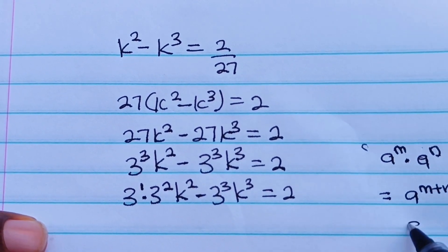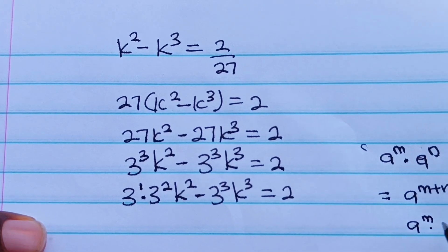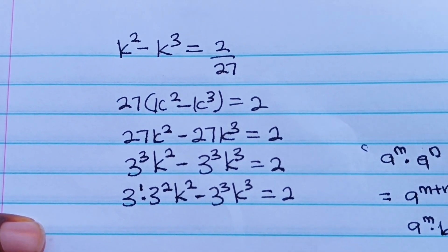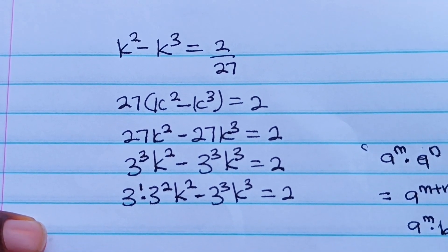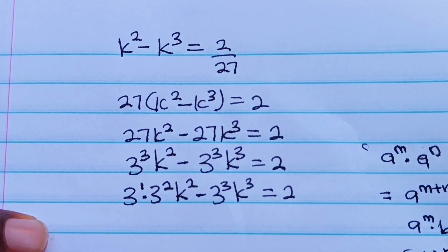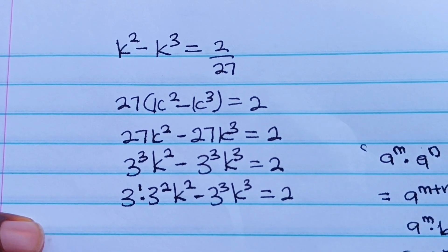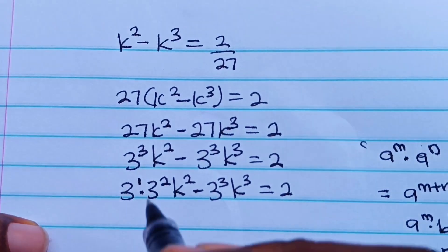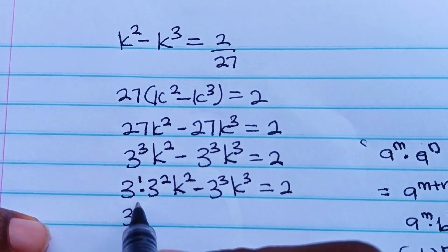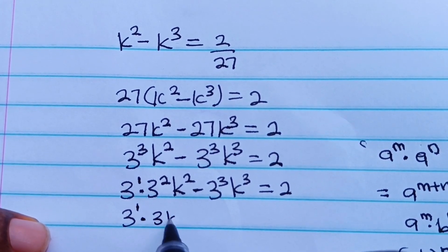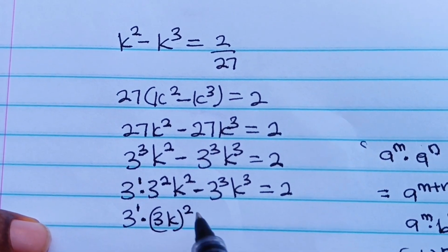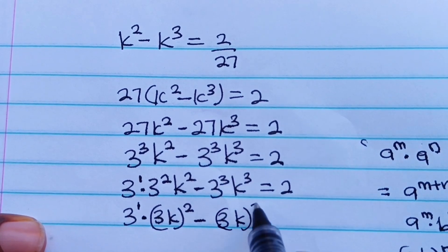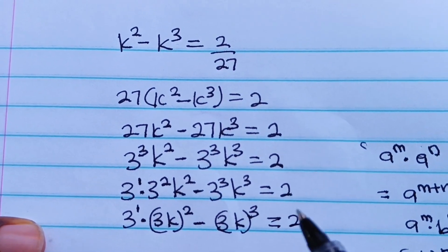I want us to recall also that a^m multiplied by b^m is equal to (a × b) everything raised to the power of m. So that is exactly what we are going to do right now. We have 3¹ multiplied by — we are going to bring 3 and k together and square both of them, minus we bring 3 and k together and cube both of them, is equal to 2.